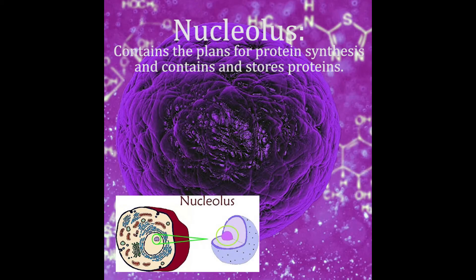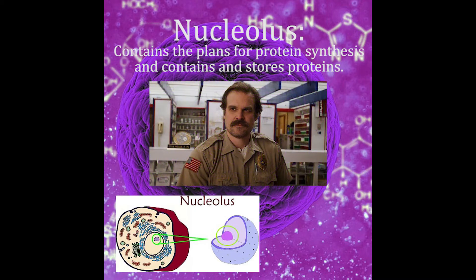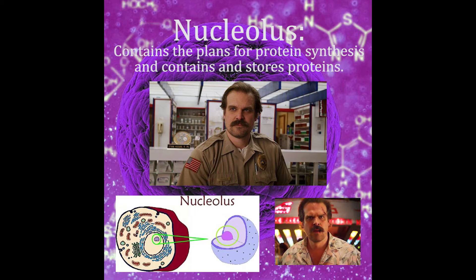Next we have the nucleolus, which stores all the records and plans, just like Hopper. This dude has got the plans — he's got it all going on. Follow him, you know where you're going. Let him be the leader and he'll lead you towards success. He is the man.